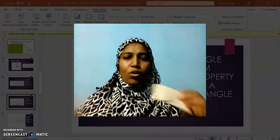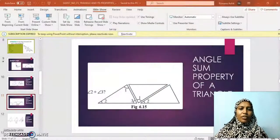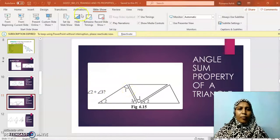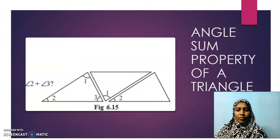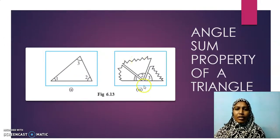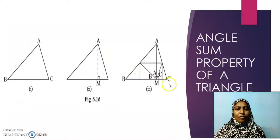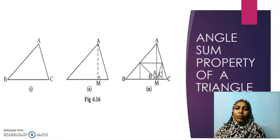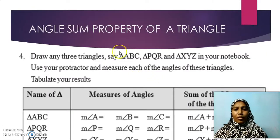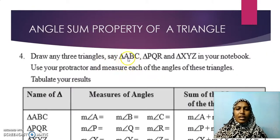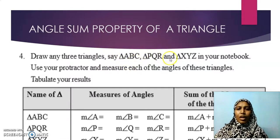This property is called the angle sum property of a triangle. We demonstrated it through three activities: first by arranging the triangles, then by tearing and rearranging the angles, then by folding. In all cases, we get all angles added together to give 180 degrees. So at home, you are going to draw three triangles — triangle ABC, triangle PQR, and triangle XYZ — and measure angle A, angle B, angle C for one triangle.